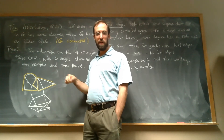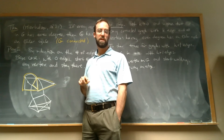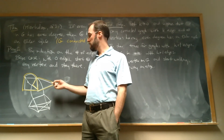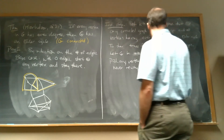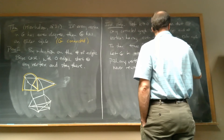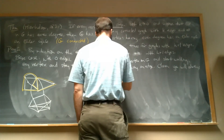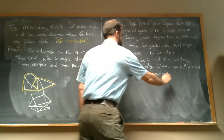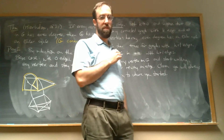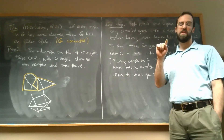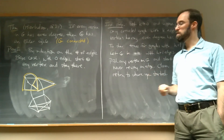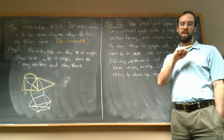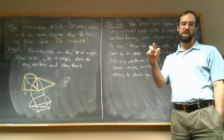Notice: I drew this path and I actually came back to where I started. I claim that's always going to happen. If you just keep walking without reusing an edge, you can't help but eventually come back to where you started. Why? Because of the fact that all vertices have even degree. Every time I go through a vertex, I use up two of the edges, and I'm not allowed to use them again.